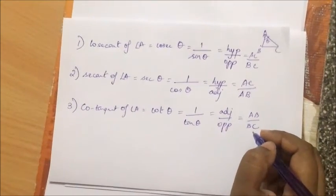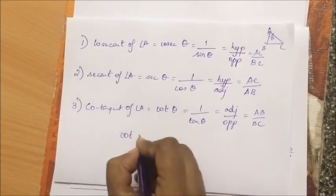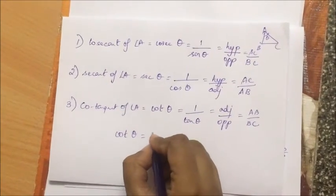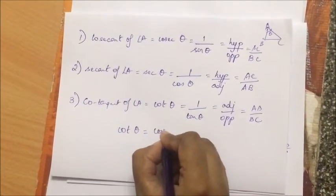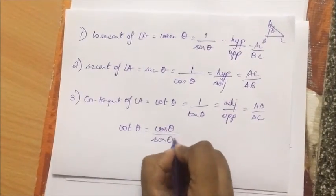As I already mentioned, tan theta can be written in terms of sine and cos. Likewise, cot theta can also be written in terms of sine and cos. So that would be reciprocal of cos over sine theta.